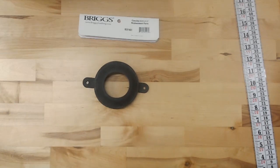Once again, this is the genuine Briggs replacement tank to bowl gasket, part number B351461.